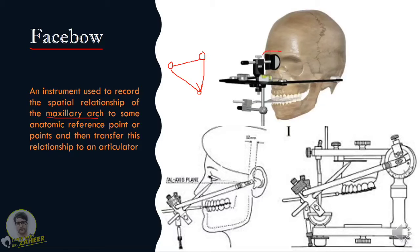What you see over here is that the anterior reference point used is the nasion, and here it is the infraorbital notch. Any posterior or anterior reference point can be used — there are different posterior and anterior reference points. Anything can be used, and finally what we want to achieve is to obtain the spatial relationship of the maxilla with respect to the terminal hinge axis. That is what the facebow is going to help us achieve.